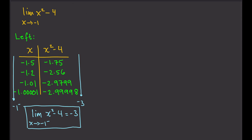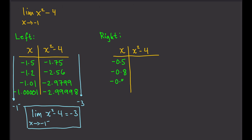Next, we have to find the right limit. We're going to do the same thing and list down numbers that are greater than negative 1. I'll start with negative 0.5, negative 0.8, negative 0.99, and negative 0.9999 — these are values from the right of negative 1. For negative 0.5, we get negative 3.75, plugging that in, squaring, and subtracting 4.